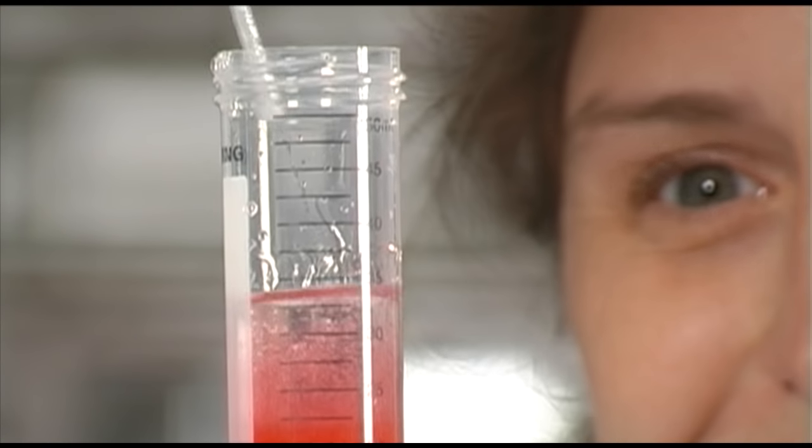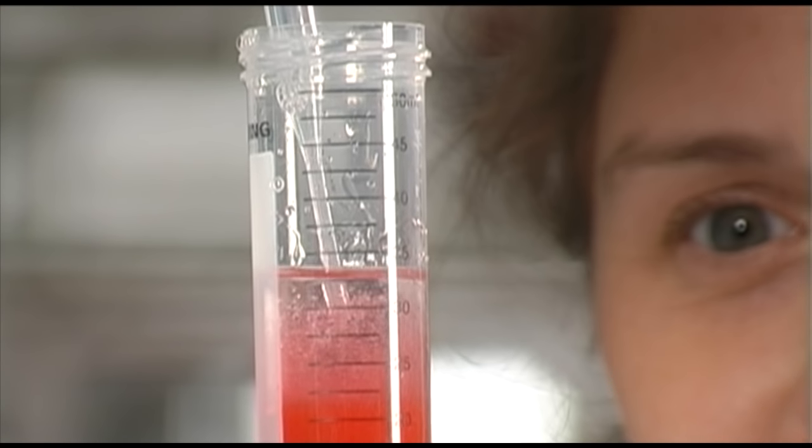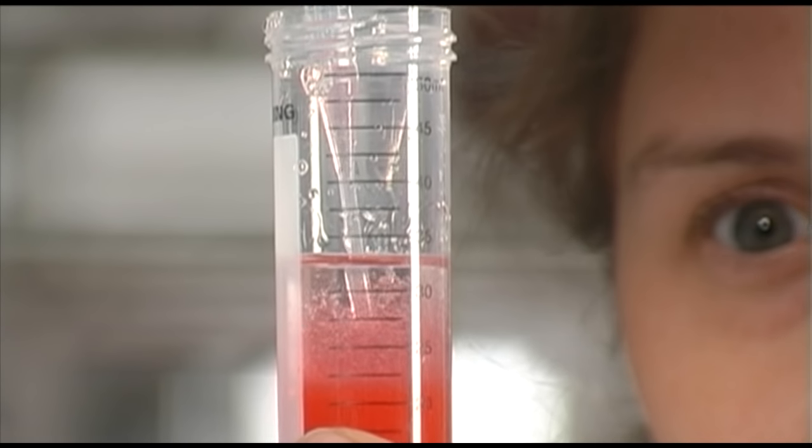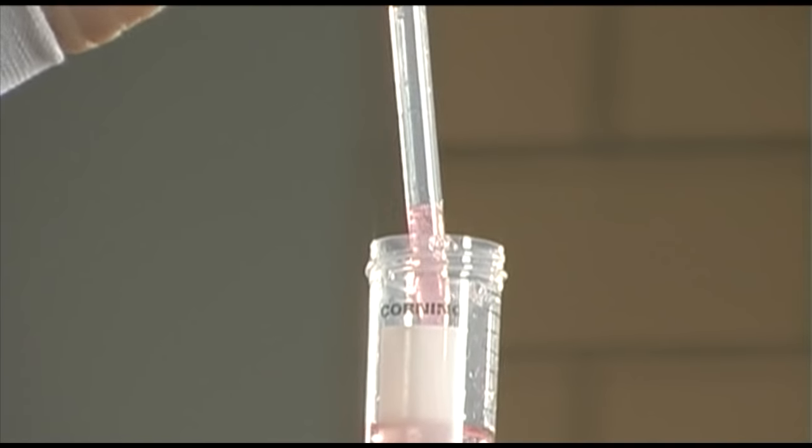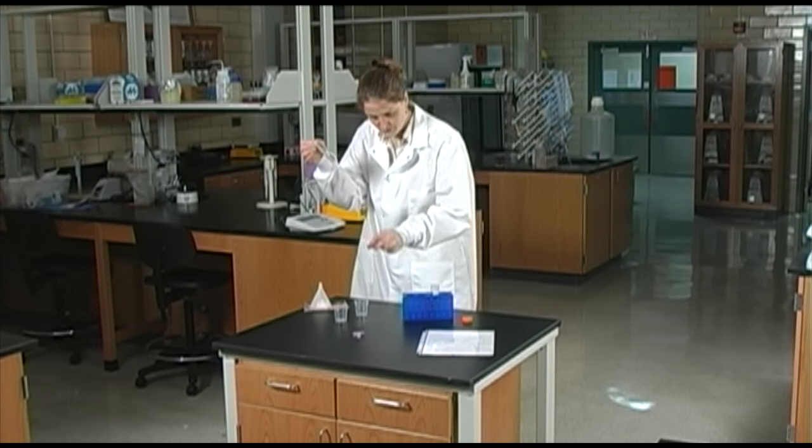The DNA precipitate looks like fine white strands of cotton fiber, almost like spider webs. Now you can use the pipette to remove the DNA from the tube, look at it, touch it, or place it into another tube to keep.